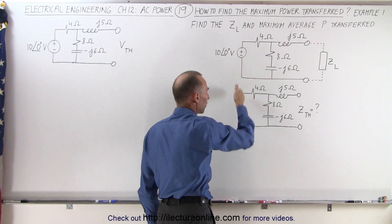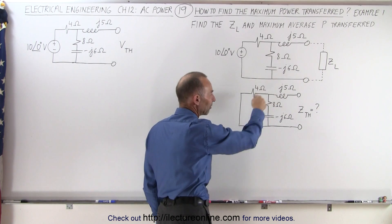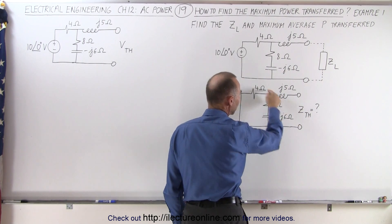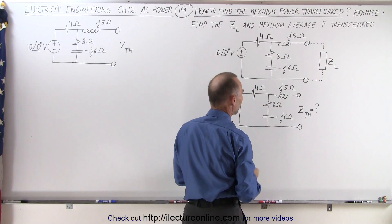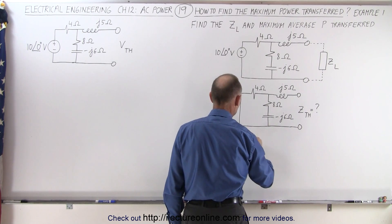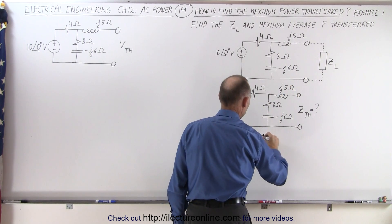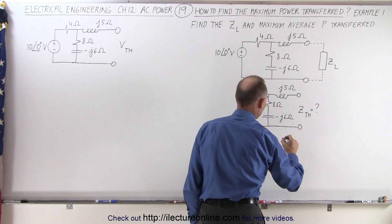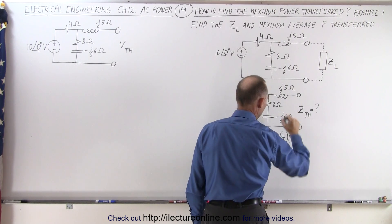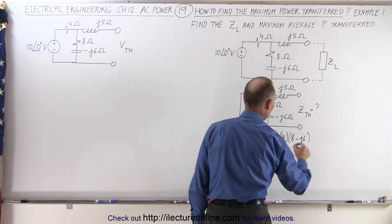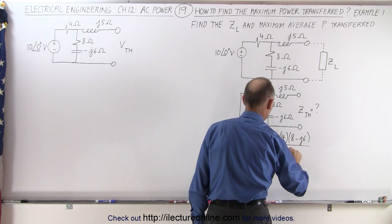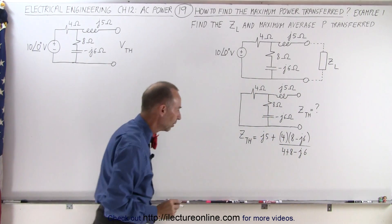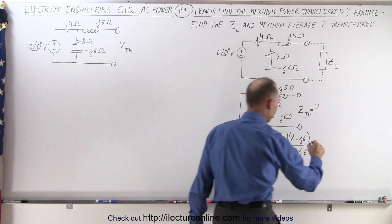First we remove the voltage source, we replace it with a short and we try to find the impedance here. Notice from here to there we have this in series with these impedances, and of course those are in parallel to one another. That means that Z_Thévenin is equal to J5 plus — using the product over sum method — 4 multiplied times (8 − j6) divided by the sum, which would be 4 plus (8 − j6).